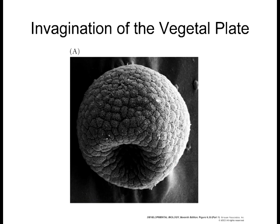Here you can see an electron scanning micrograph — a very high resolution, high detail image showing the invagination of the endoderm cells at the vegetal pole.